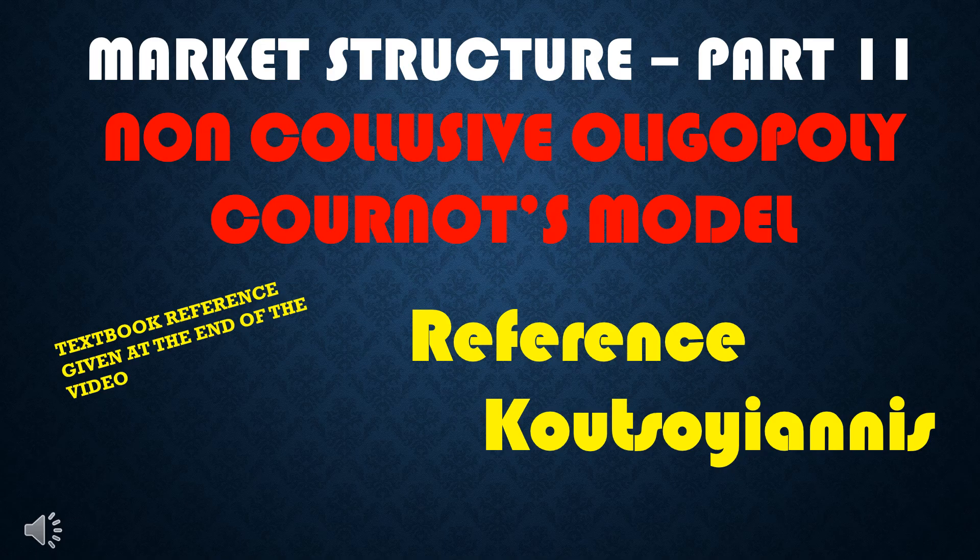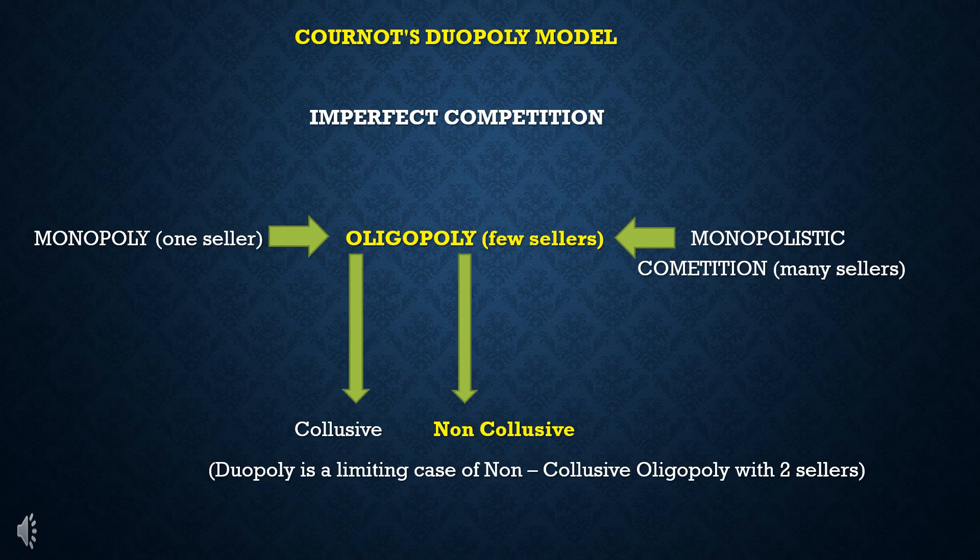This lecture covers Non-Collusive Oligopoly and Cournot's Model. Cournot's Duopoly Model is a limiting case of Oligopoly. Oligopoly is a market structure having only a few sellers in the market. Oligopoly actually lies between monopoly and monopolistic competition.